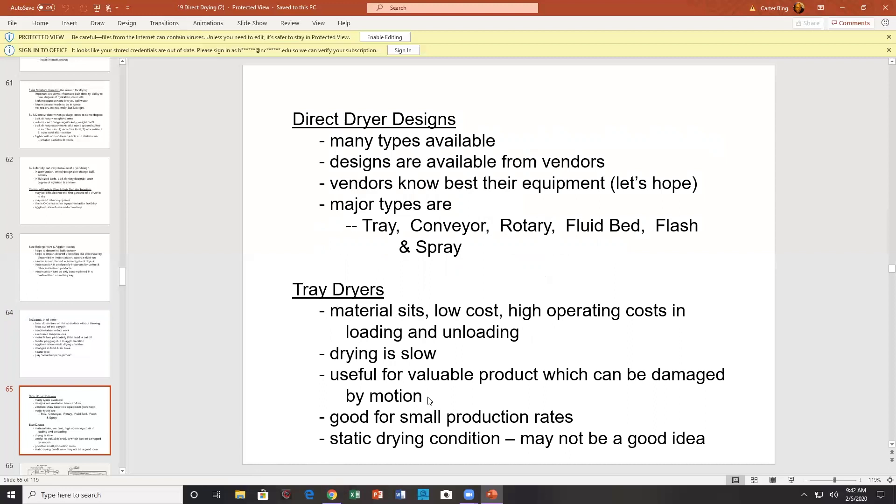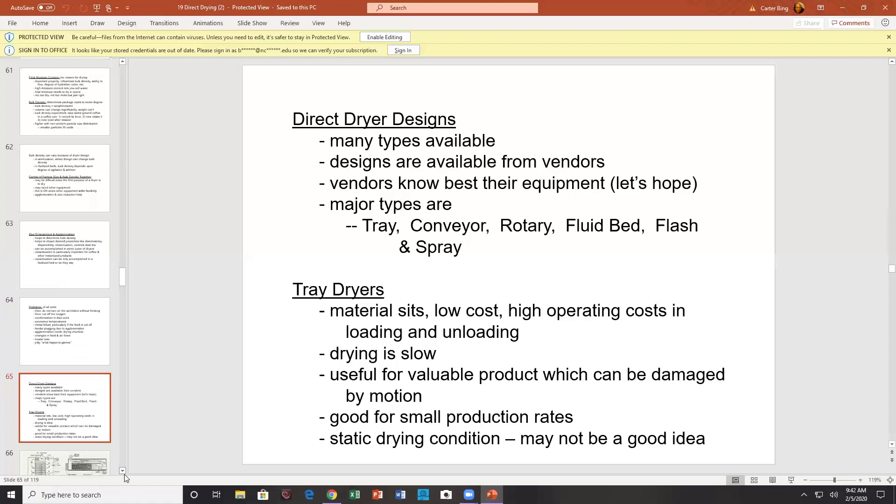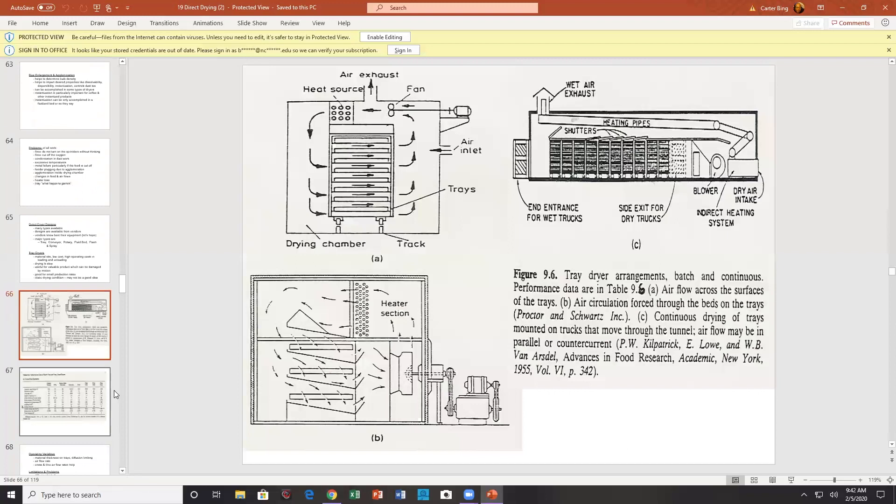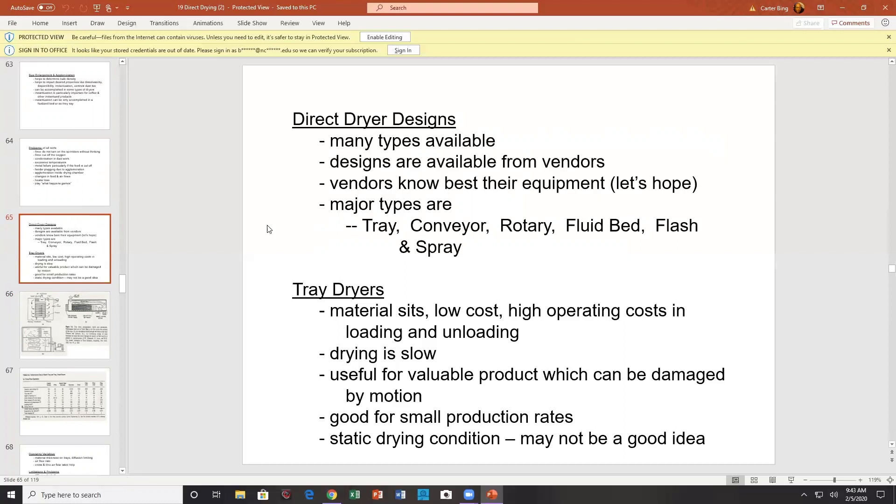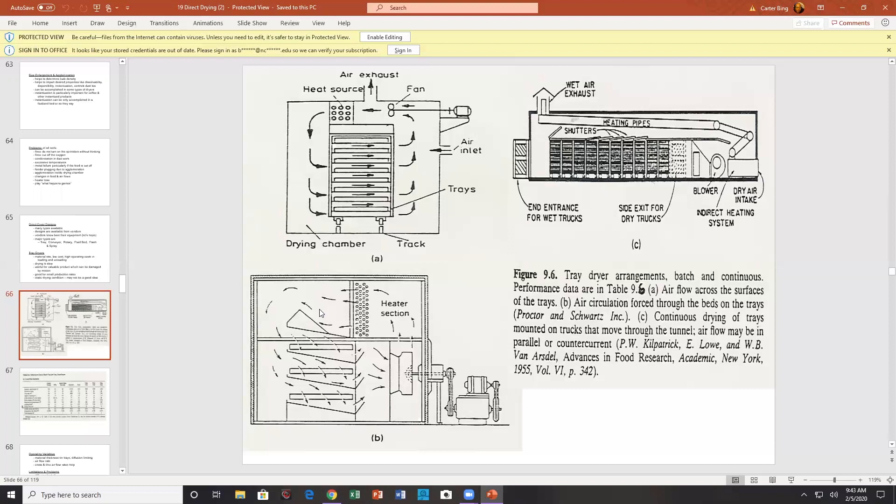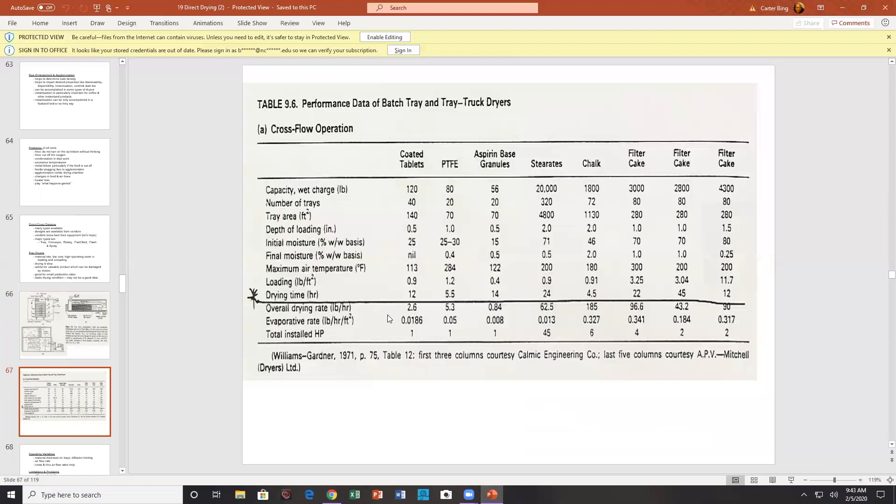We're going to go into the dryers now. And this is where we left off last time. Tray dryers, material sits. Low cost, high operating costs of loading and unloading. Dry you slow. Used for valuable products that can be damaged by motion. Good for small production rates. Static drying condition may not be a good idea. It just sort of sits there. So to avoid that in static condition, you try to pass the air through the material you're trying to dry. Certainly you want to pass over. You have drying times on hours, 12 hours, 14 hours, long time. Usually you're running into diffusional drying because you're not allowed to move the solids around that much.